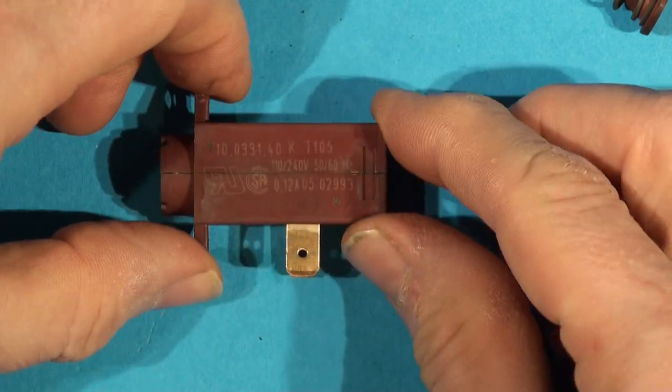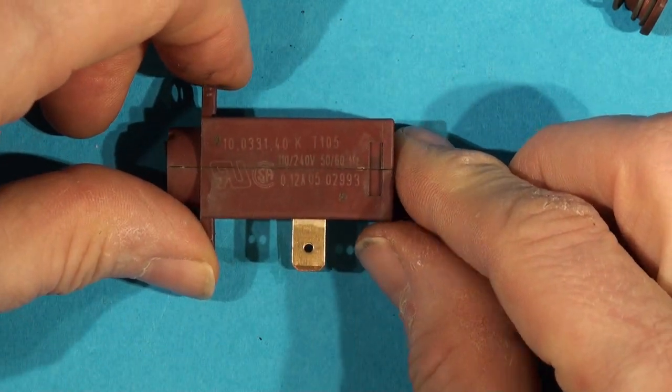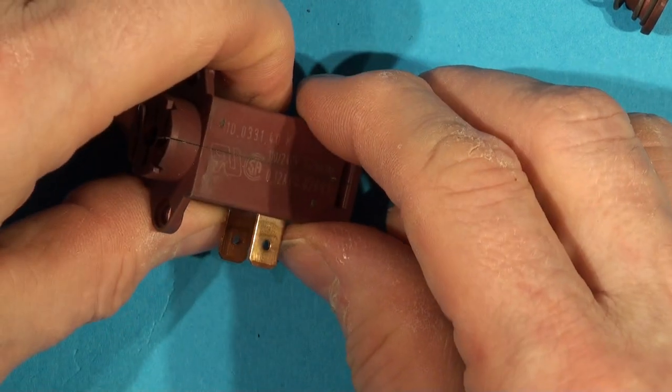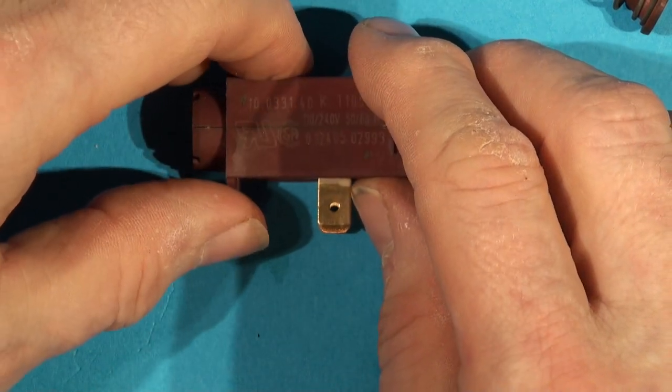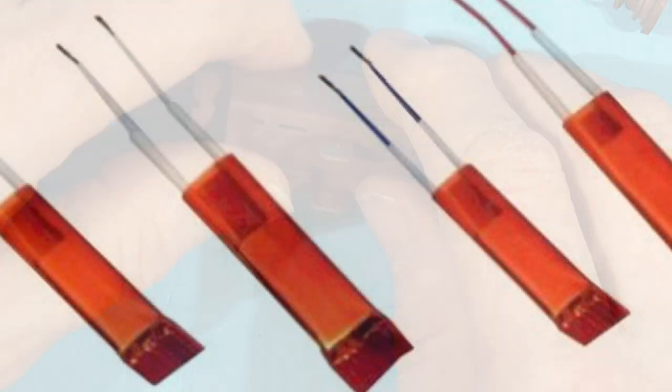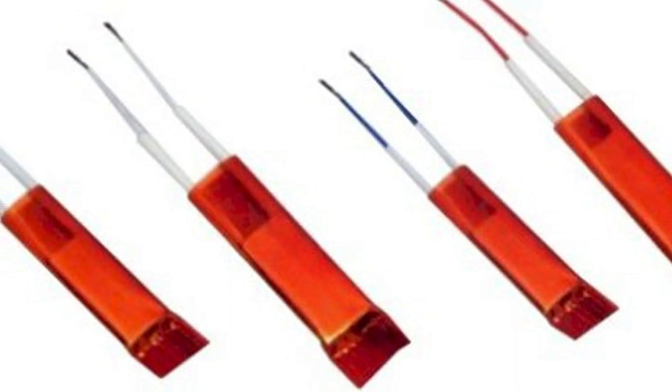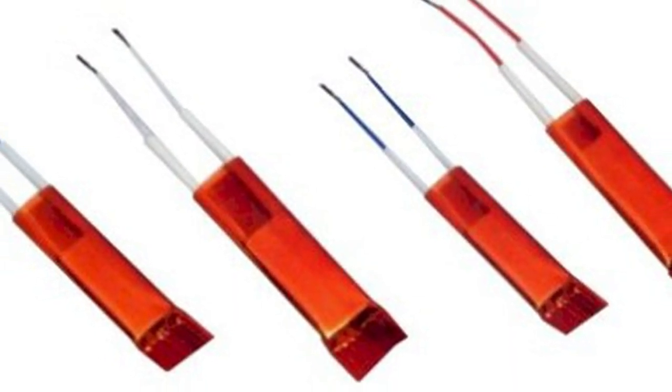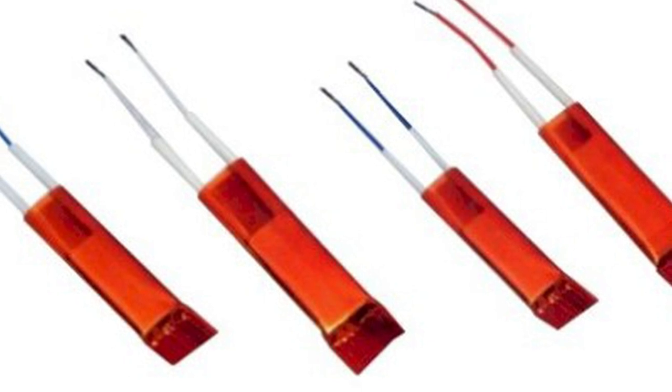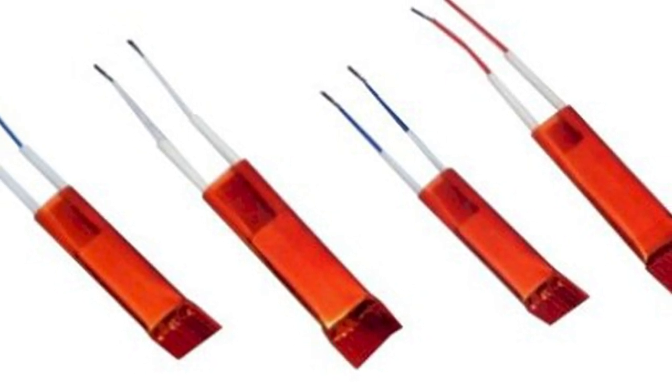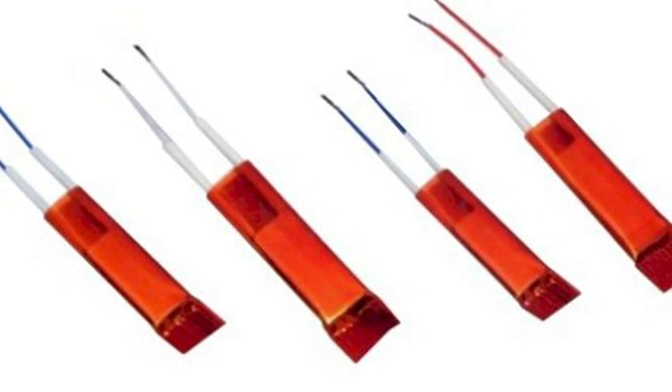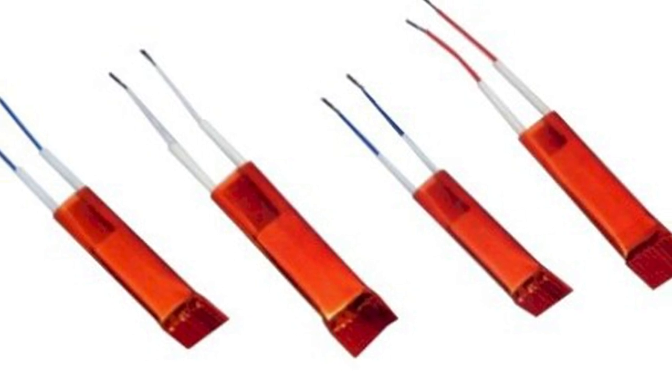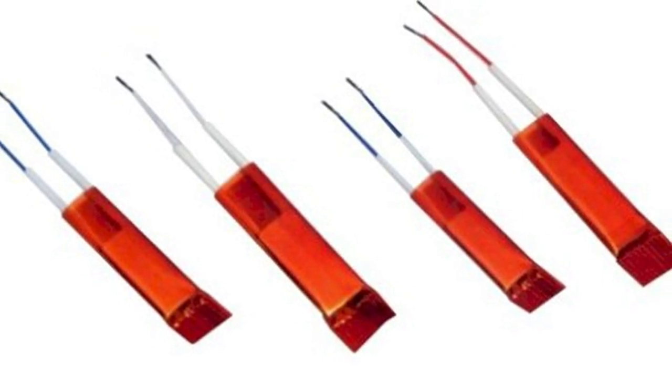This one has blown up and the dishwasher was blowing fuses. Inside here is a positive temperature coefficient heating block. It's the same sort of heating block you have in a glue gun, for example.